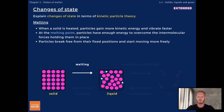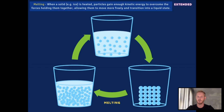Let's begin with melting — the transition of a solid to a liquid. When a solid is heated, particles gain more kinetic energy and vibrate faster. At the melting point, particles have gained enough energy to overcome the intermolecular forces holding them in place. As a result, the ordered arrangement breaks down and particles start moving more freely, giving the substance the properties of a liquid — it can flow and take the shape of its container.